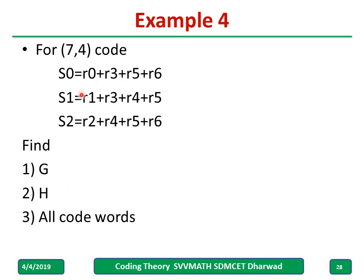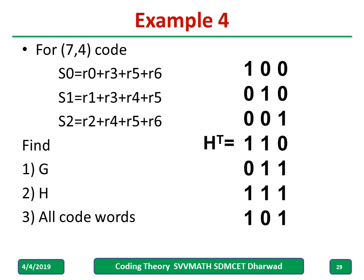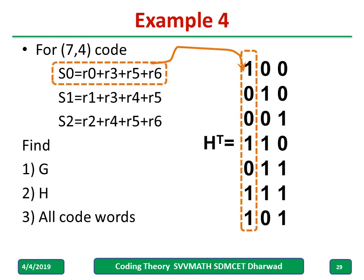Take another example: if syndrome equations are given, what to do? The syndrome equations give H^T directly. Write down H^T, take its transpose to get H. From H you know how to get G. In the syndrome equation, for example, r0 is present, r1 is present, r2 is not, r3 is present, r4 is not, r5 and r6 are present — write those three equations as H^T. Once you get H^T, transpose it to get H, extract P^T, find P, write G = [I | P], and then c = d·G gives all code words.